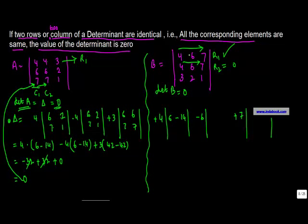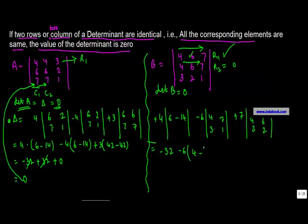For element 6 (ignoring its row and column): the sub-matrix gives (4×1 − 7×3) = 4 − 21 = −17. For element 7: the sub-matrix gives (4×2 − 6×3) = 8 − 18 = −10. So the determinant is: 4×(−8) + (−6)×(−17) + 7×(−10) = −32 + 102 − 70.